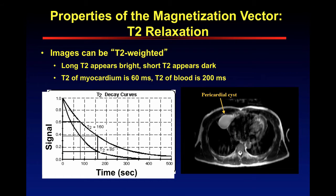Images can be T2-weighted, just like T1. Long T2 appears bright; short T2 appears dark. T2 of myocardium is 60 milliseconds — so this is going to be dark — and T2 of blood is 200 milliseconds. If you look at a pericardial cyst, it must be a long T2 because it's bright, since fluid must be a long T2.